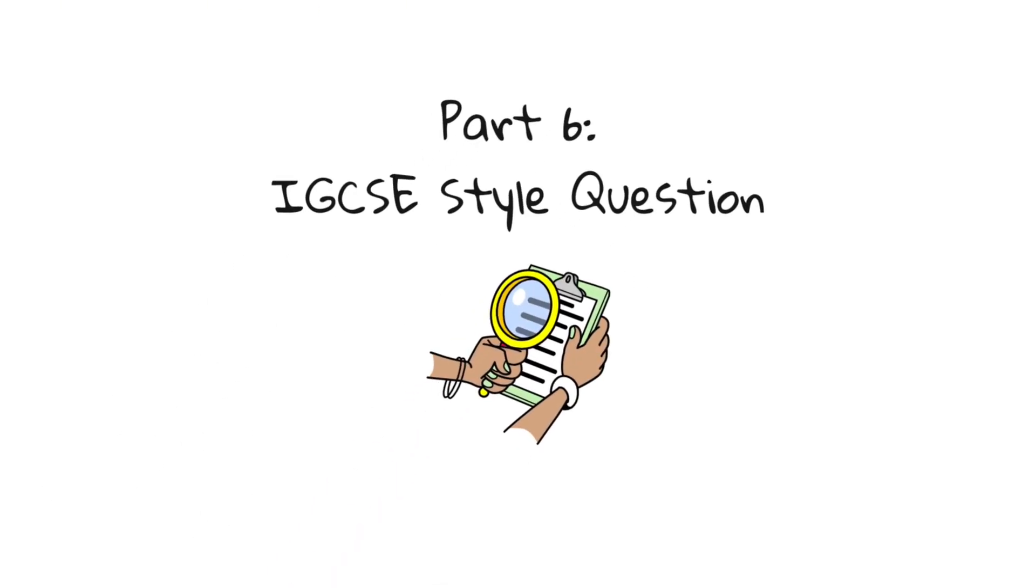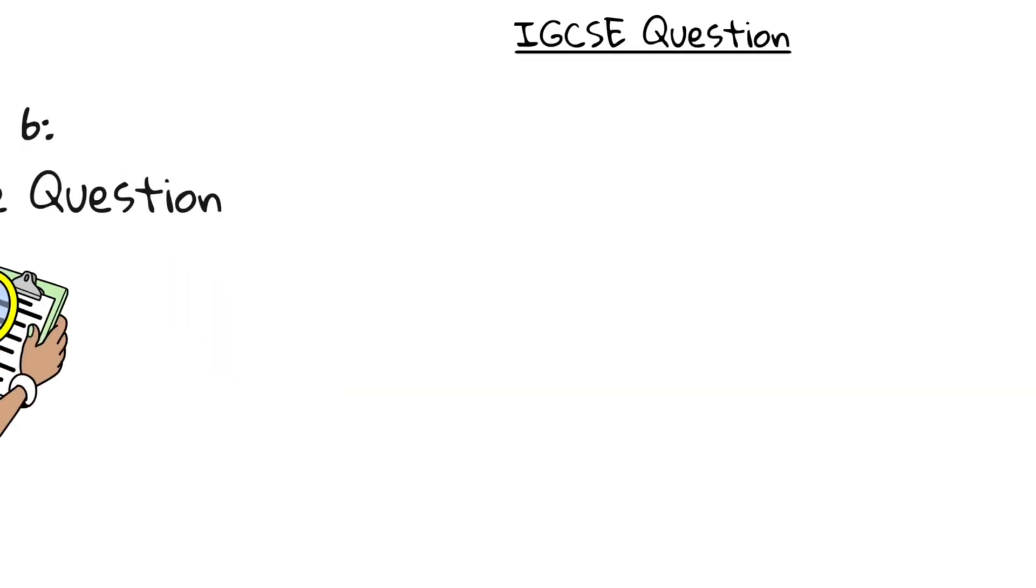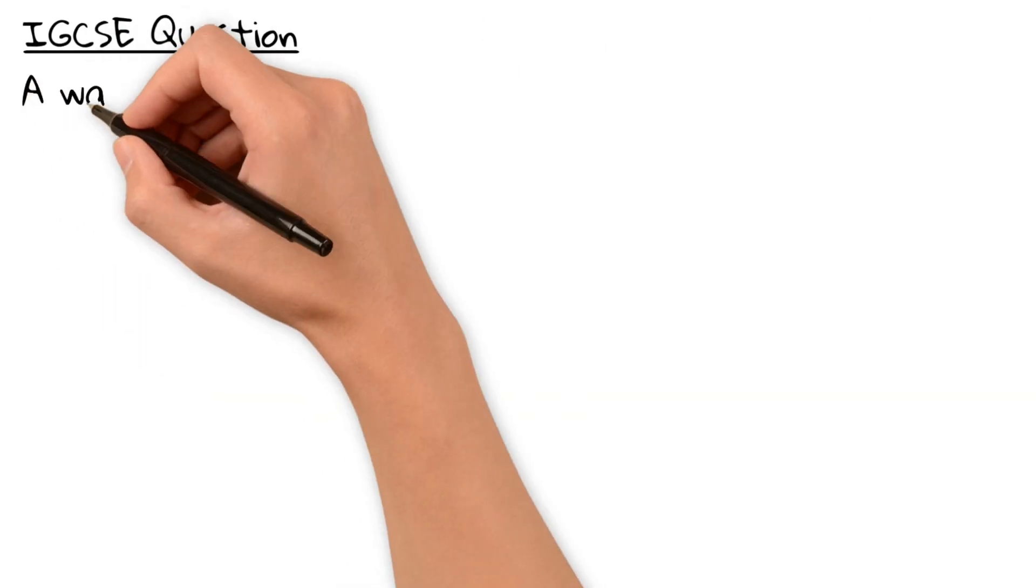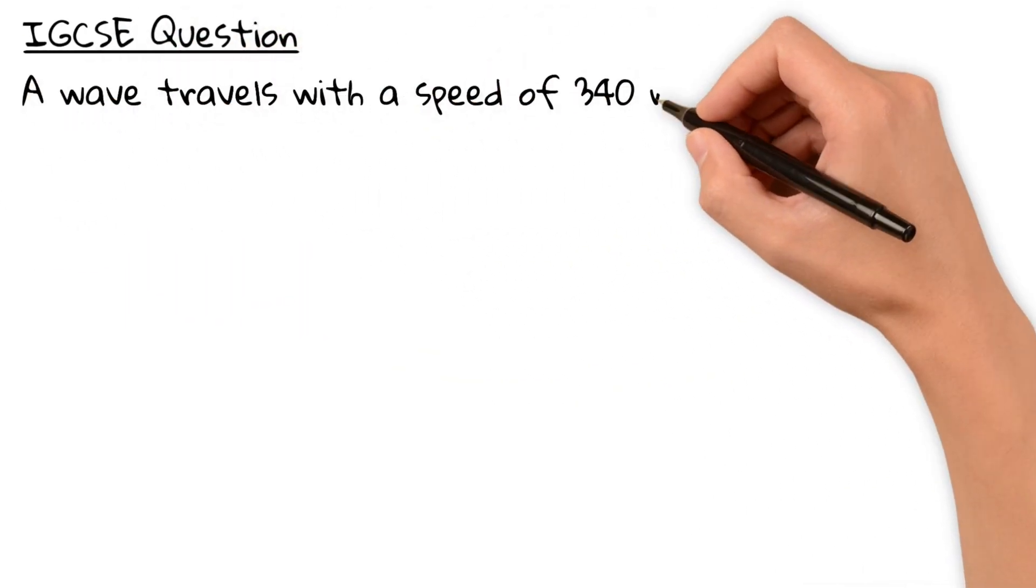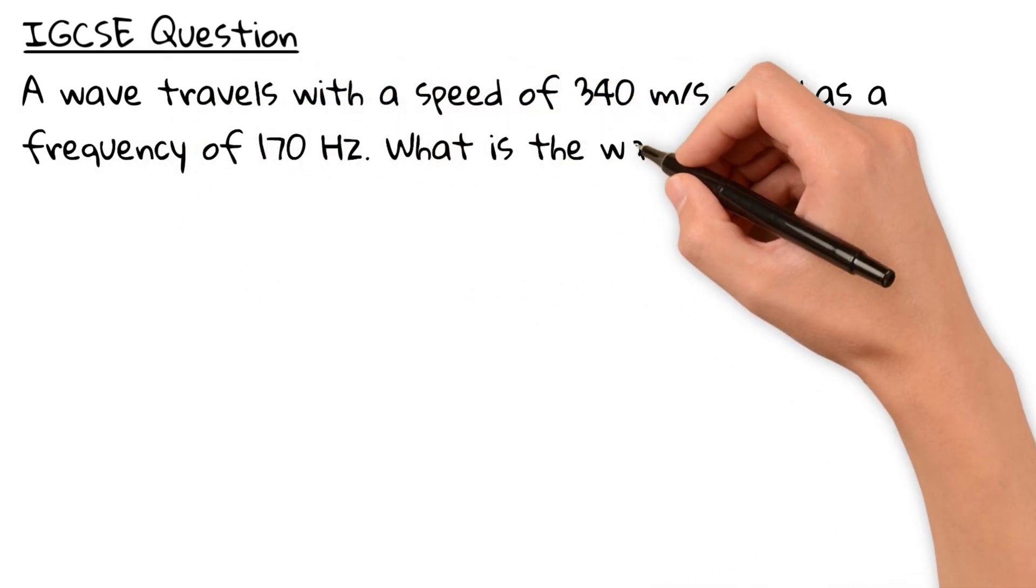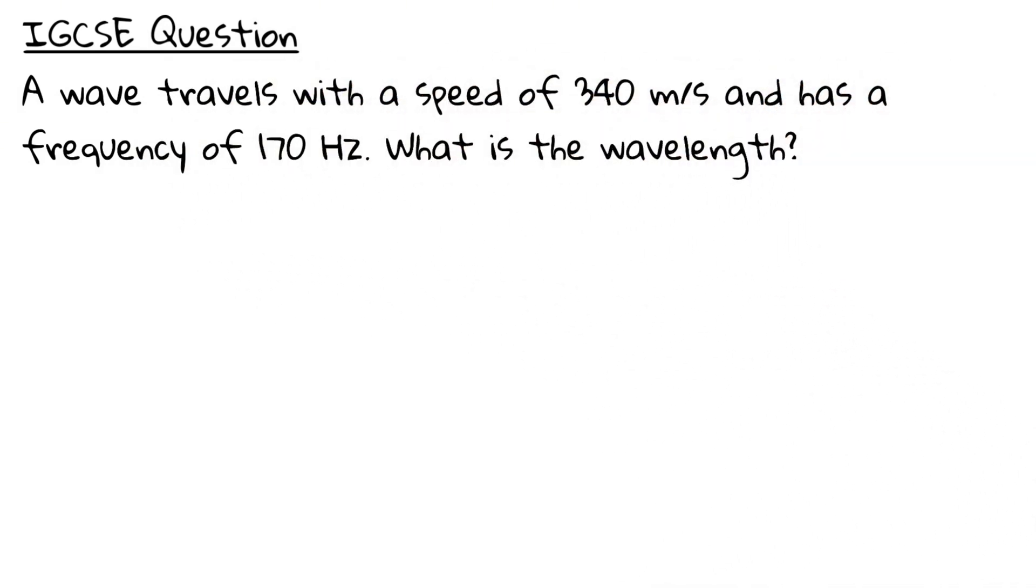Let's try a quick IGCSE exam style question. A wave travels with a speed of 340 meters per second and has a frequency of 170 hertz. Calculate its wavelength. Pause the video and give it a try.